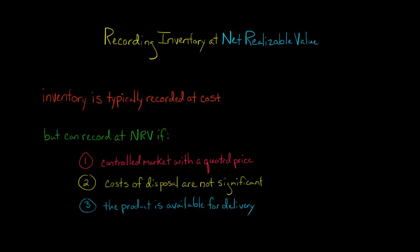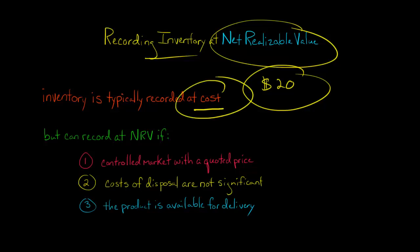Most companies record inventory at cost. So if it costs Walmart $20 for a t-shirt, then Walmart would have the t-shirt on the balance sheet at $20. But in some cases, rare cases, companies can record inventory at net realizable value. Most companies have to record inventory at cost, and then there's the lower cost or net realizable value rule.